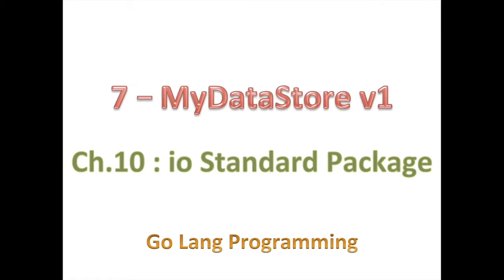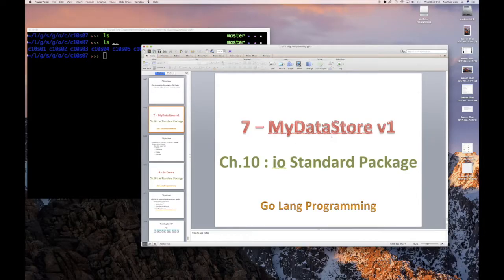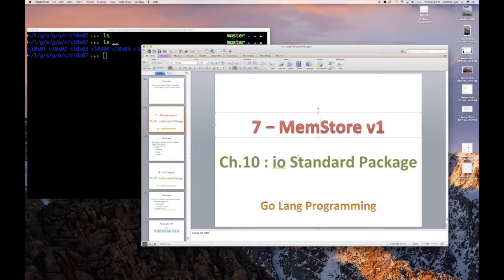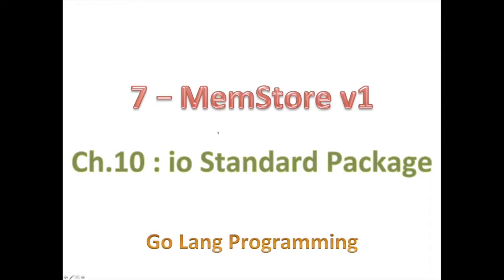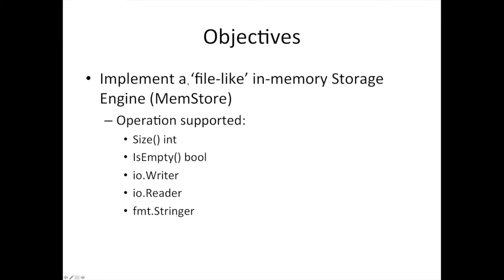We're not going to be doing the reader alone. We kind of looked at the reader already and implemented everything using sections 5 and 6. So here we're going to implement what I'm going to call mem store - not data store, but mem store. We're going to implement a memory store. It's going to combine everything we've learned so far about the reader and writer. It's going to implement a file-like, in-memory storage engine. We can call it mem store.